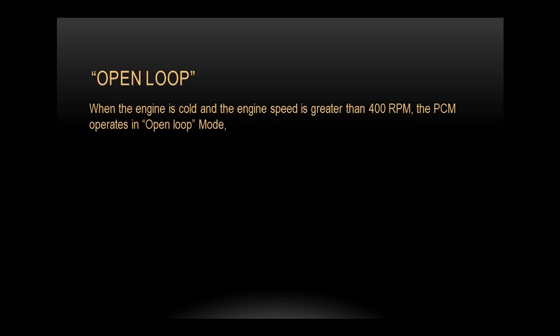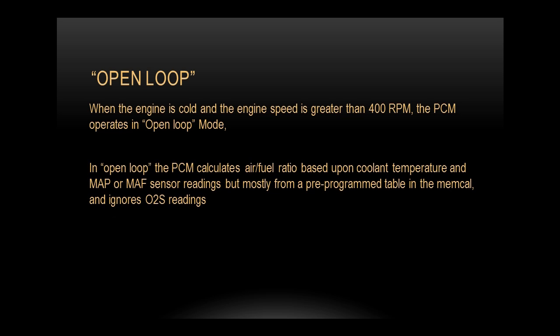Open loop: when the engine is cold and the engine speed is greater than 400 RPMs, the PCM — power control module — operates in open loop mode. In open loop, the PCM calculates air-fuel ratio based upon coolant temperature and MAP (manifold absolute pressure) or MAF (mass air flow sensor) readings, but mostly from a pre-programmed table in the MEMCAL, and ignores the O2 sensor readings. It's simply running off of pre-programmed data and not making broader adjustments.